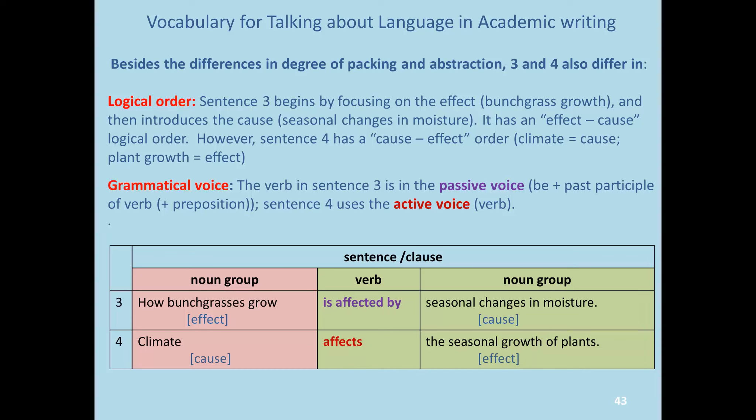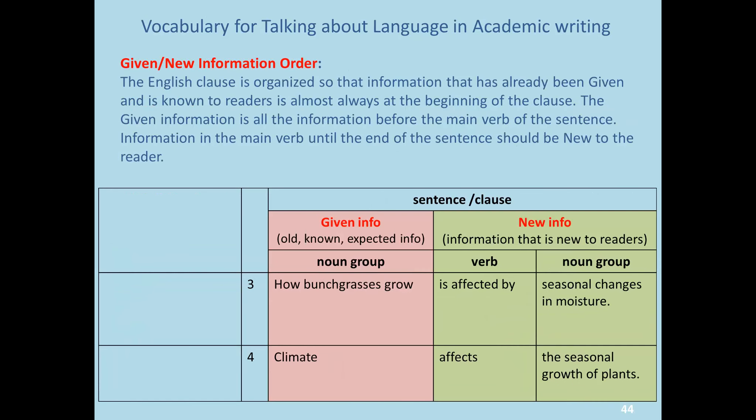Some more vocabulary. Besides the differences in degree of packing and abstraction, sentences 3 and 4 also differ in logical order — you might have noticed this yourself — and also in terms of grammatical voice, which many students are aware of as well. There's one more important piece of vocabulary: given and new information order.